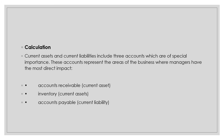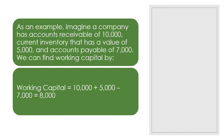Current assets and current liabilities include three accounts of special importance, representing the areas of the business where managers have the most direct impact: accounts receivable, inventory, and accounts payable. These values can be readily found on a company's balance sheet. The current portion of debt is critical because it represents a short-term claim on current assets and is often secured by long-term assets. Common types of short-term debt are bank loans and lines of credit. For example, imagine a company has accounts receivable of $10,000, current inventory valued at $5,000, and accounts payable of $7,000. Working capital equals $10,000 plus $5,000 minus $7,000, which equals $8,000.